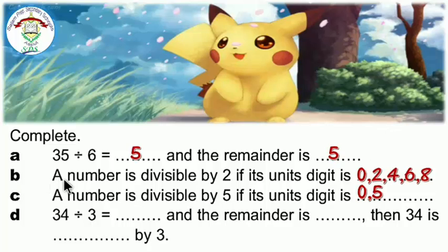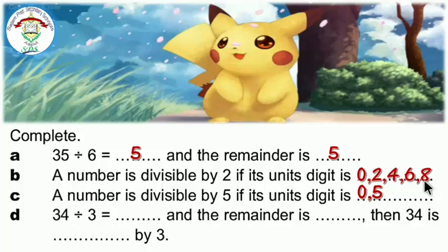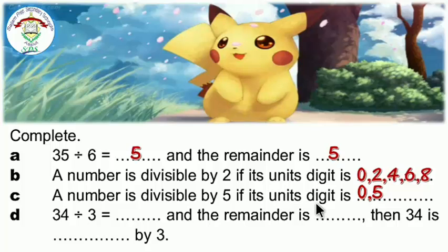A number is divisible by 2 if its units digit is 0, 2, 4, 6, or 8 — you can also say if its units digit is an even number. A number is divisible by 5 if its units digit is 0 or 5.